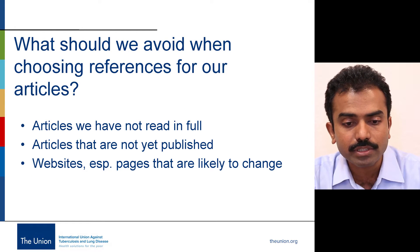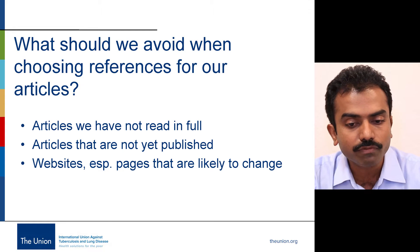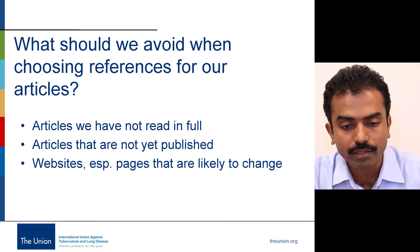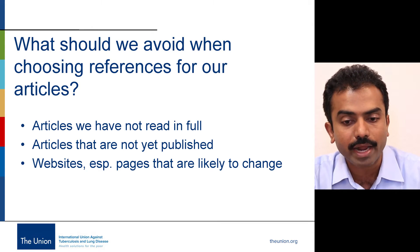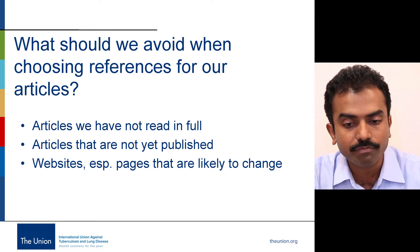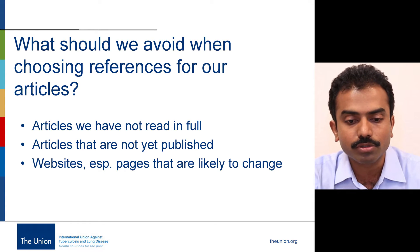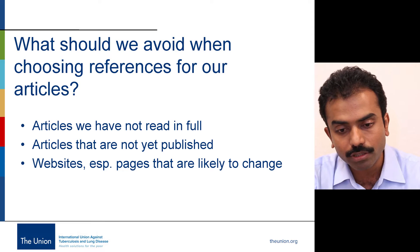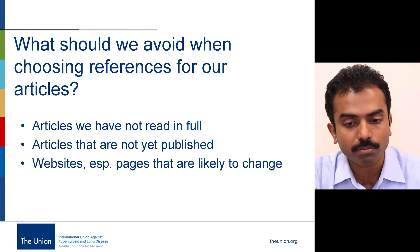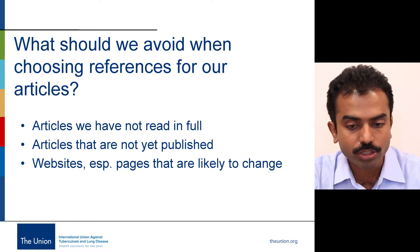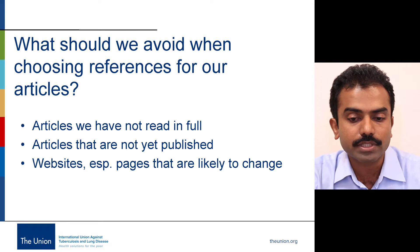What should we avoid when choosing references? Probably articles we haven't read in full — something not to cite because we don't have access to or haven't read. It's not a good idea to just read the abstract and cite it. Abstracts are often seen to be misleading and may not reflect the true findings. So if you haven't read an article in full, probably you should not cite it. Articles that are not yet published — probably you should wait until they get published. Some journals allow citing if an article is already accepted for publication and is in press.